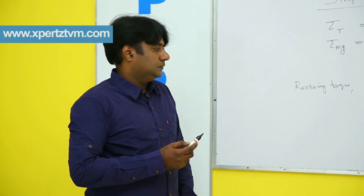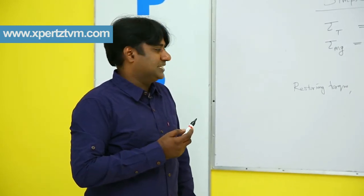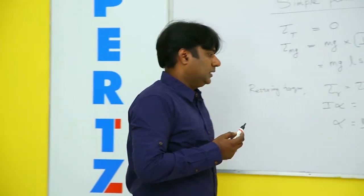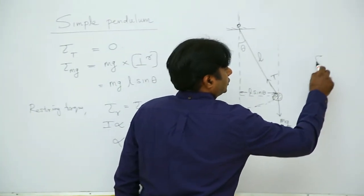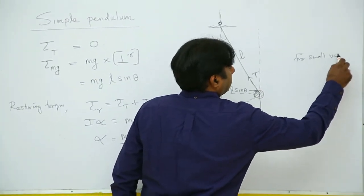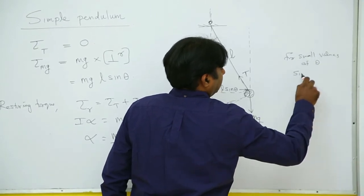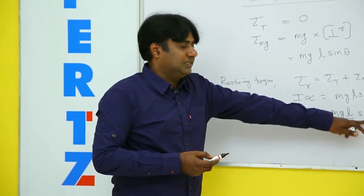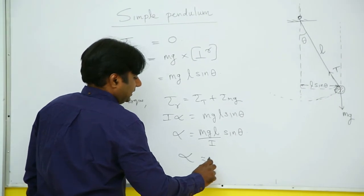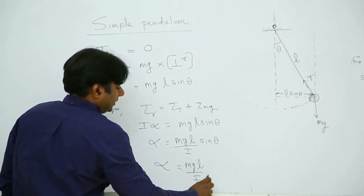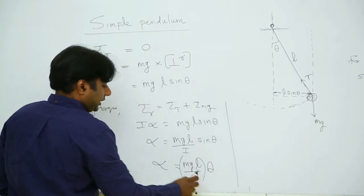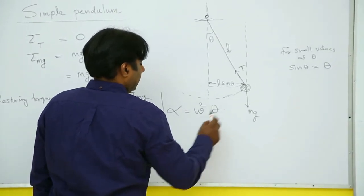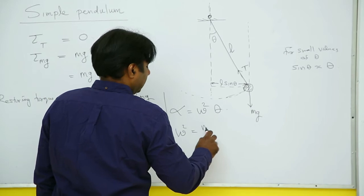Now theta very small, we will be making theta very small such that this remains SHM. If theta is very large it would not be SHM. Theta small, we know that for small values of theta, sin theta approximately equal to theta. So making theta small I can replace this sin theta by theta. So what I get is alpha approximately MGL by I theta, or alpha equal to a constant into theta and that constant is omega square. So we write alpha equal to omega square theta, where omega square stands for MGL by I.